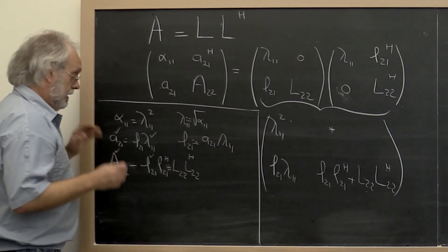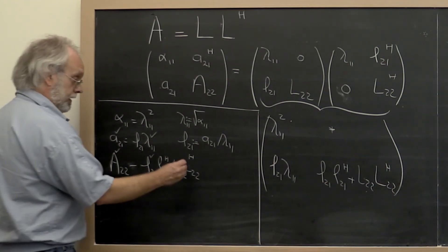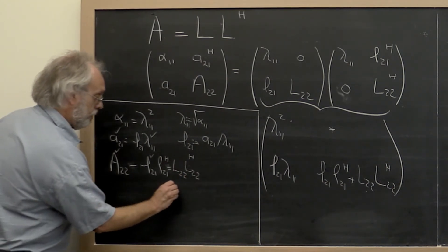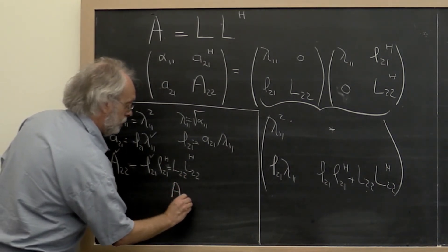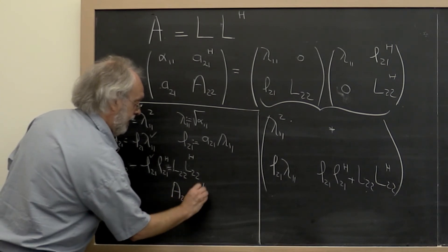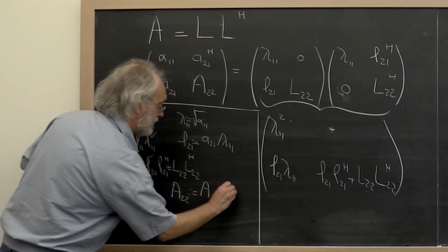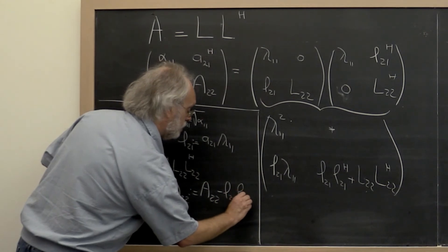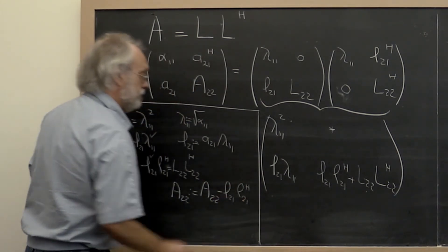Now, so what we conclude is that we should update A_2,2 with A_2,2 minus L_2,1 L_2,1 Hermitian transpose.